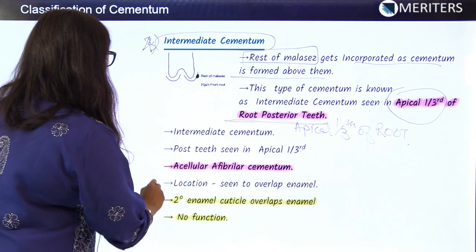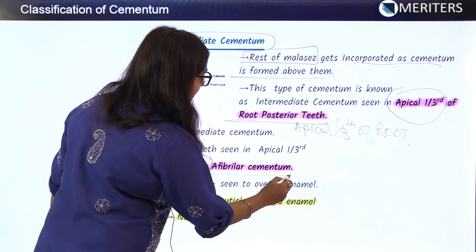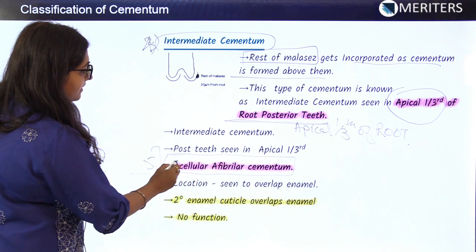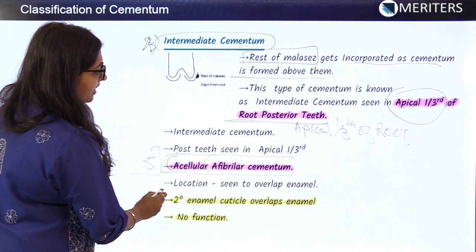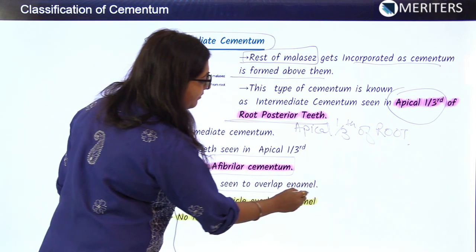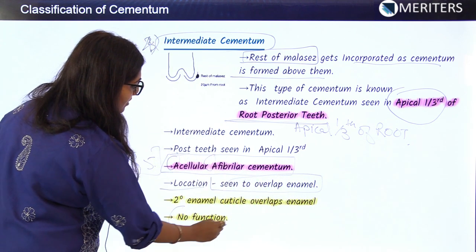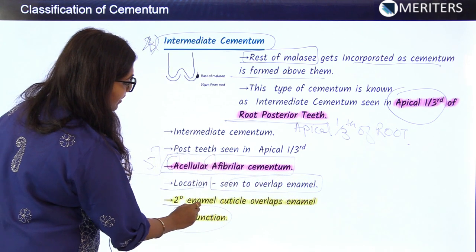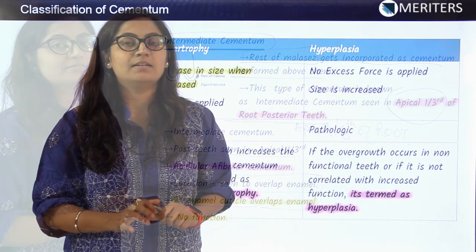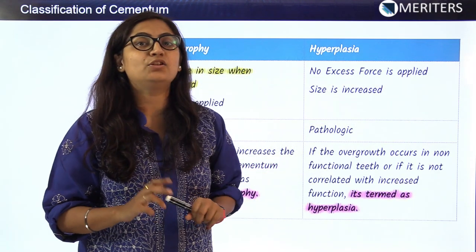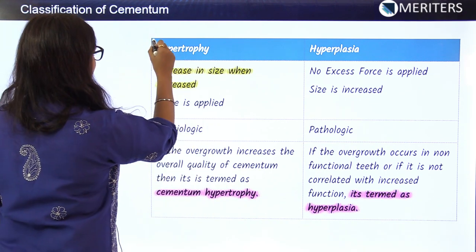The fifth type is acellular afibrillar cementum — no cells and no fibrils. Its location is overlapping the enamel, and it has no basic function. It can be called the secondary enamel cuticle which overlaps the enamel.